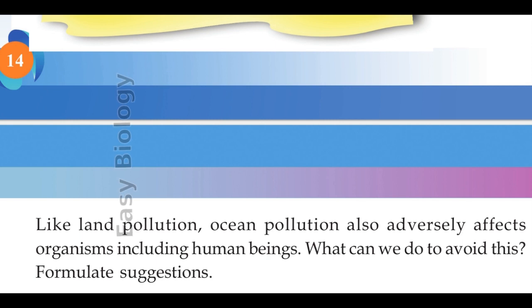Ocean pollution affects water plants, algae, fishes, and other aquatic animals. Because of ocean pollution, the rate of photosynthesis decreases. This affects the land animals badly.